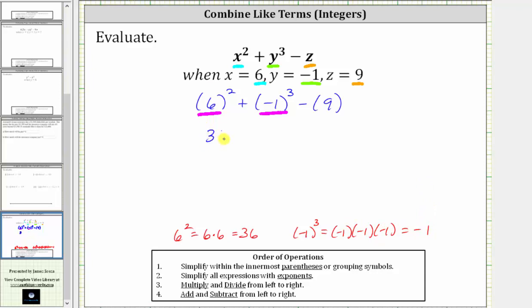Which gives us 36 plus negative one, and then here we have minus nine, and we can just drop the parentheses.